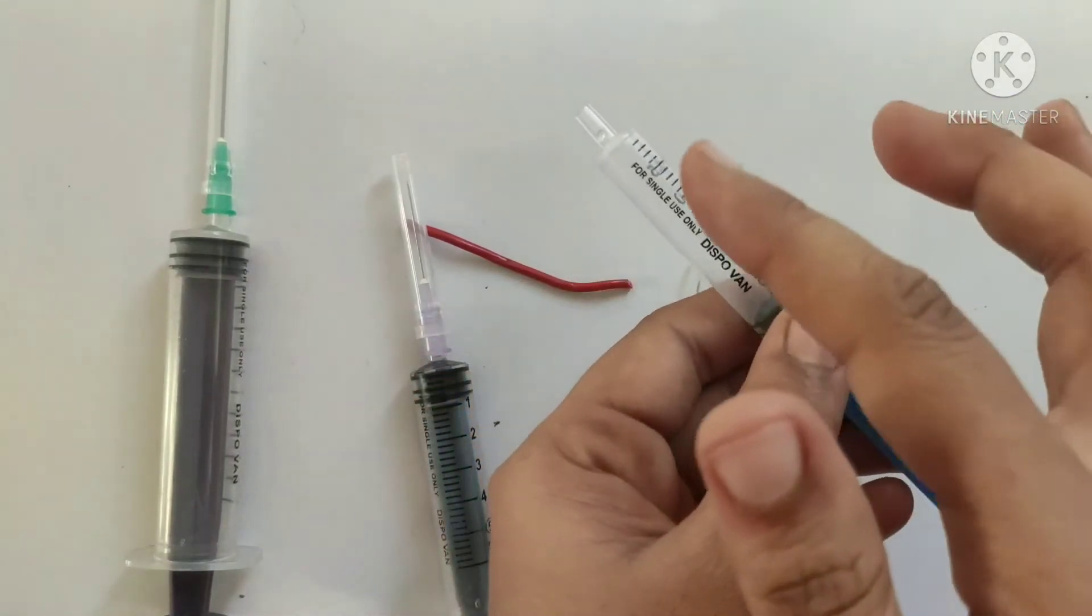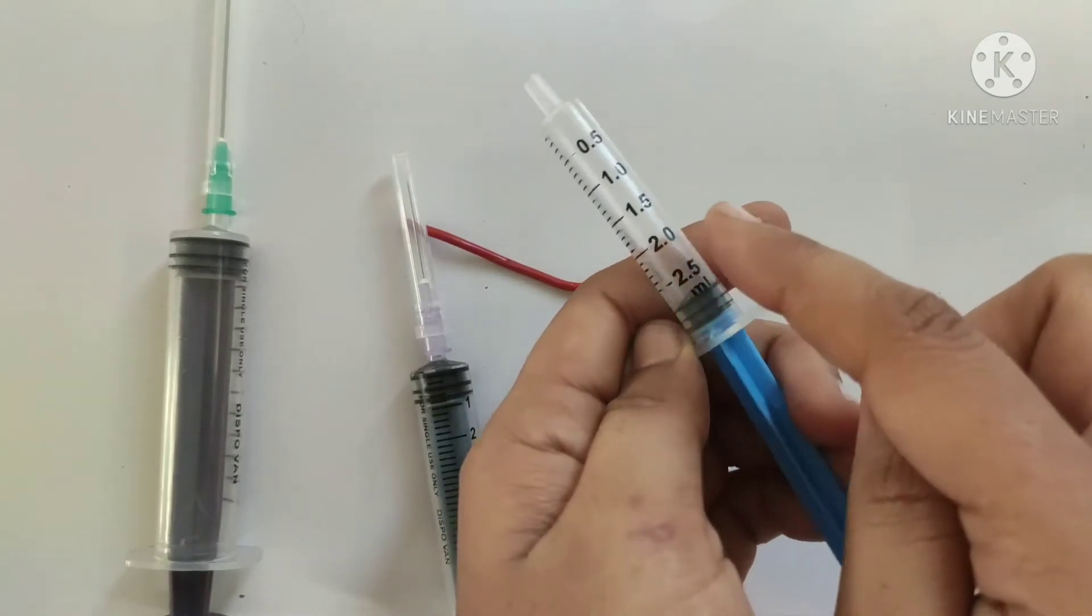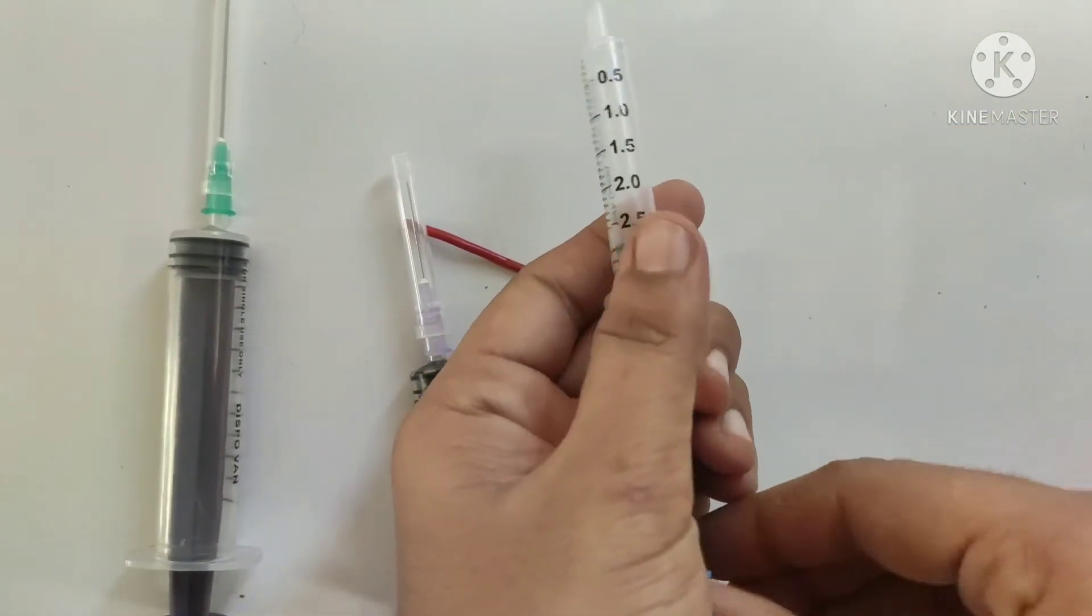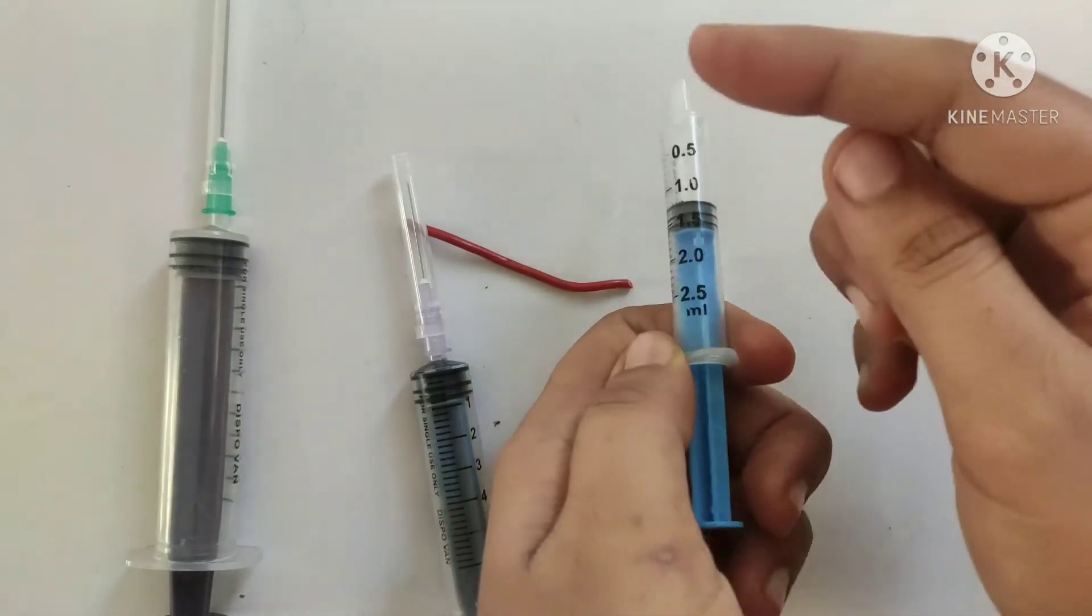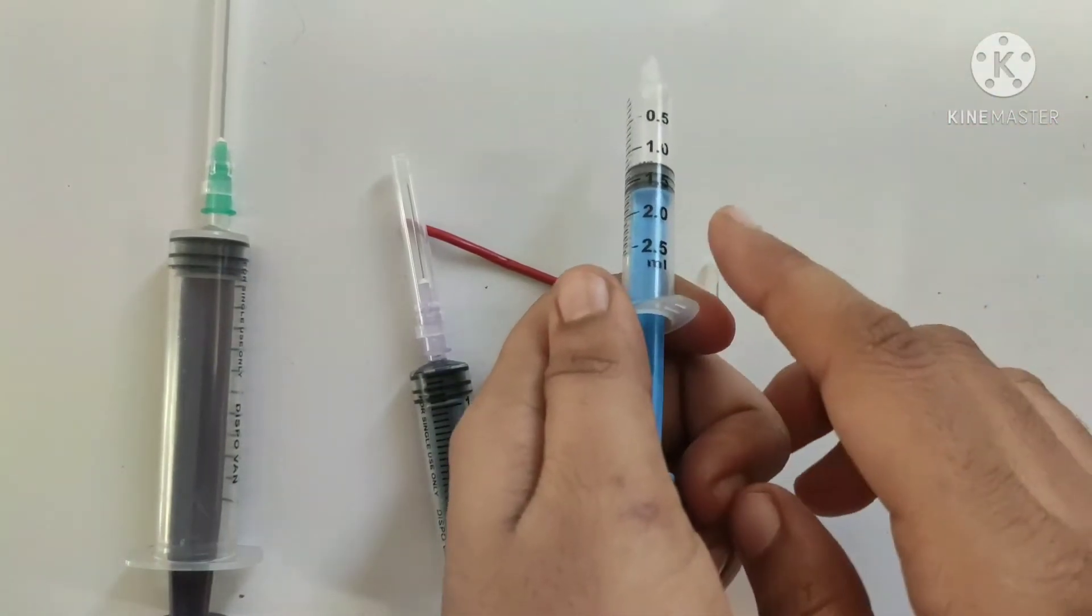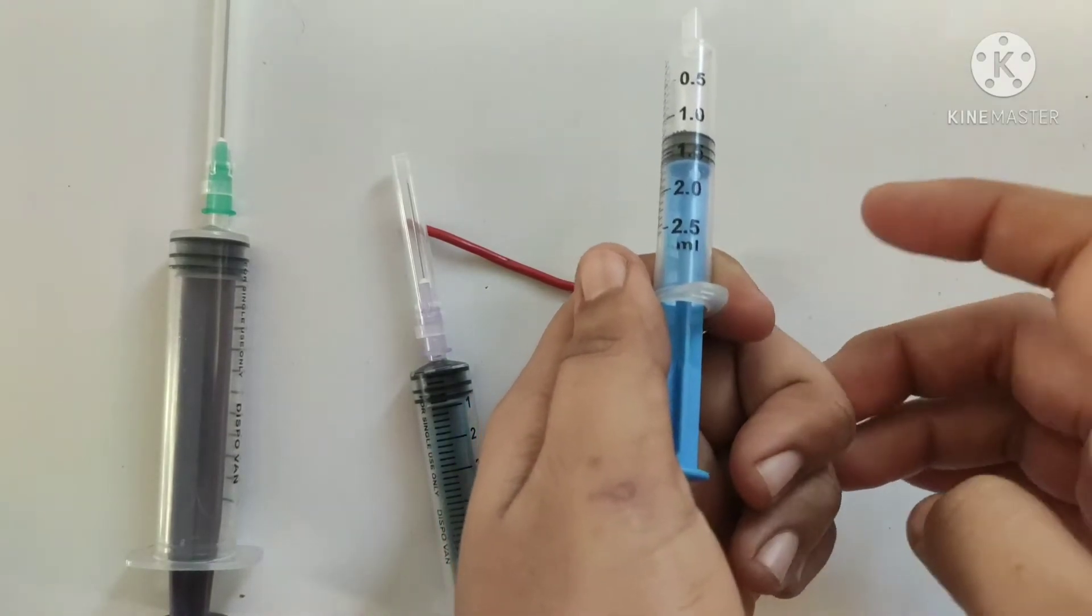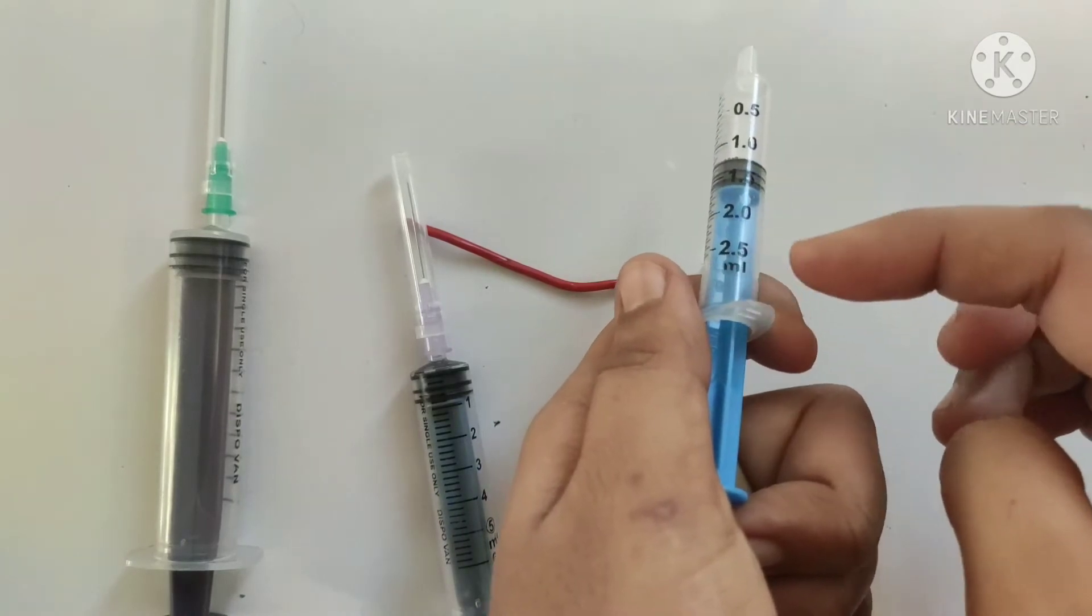Now the fluid is entered in this part which is known as barrel. This barrel has indications: 0.5, 1 point, and so on, which are in ml. But when the syringes are insulin syringes, these indications will be in units and not ml.